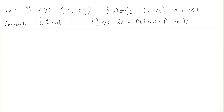To do this problem, notice that I give you the vector field, but I don't give you the potential. So if we want to use the fundamental theorem of line integrals, we have to come up with a little f such that the gradient of little f is equal to big F. In the coming videos and lectures we will come up with a systematic way to do this, but now let's just take a guess. So assume that there is an f such that the gradient of f is equal to (x, 2y).